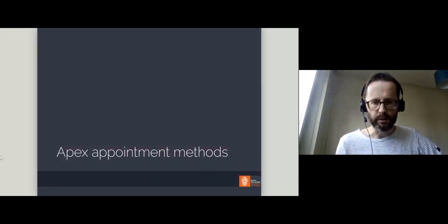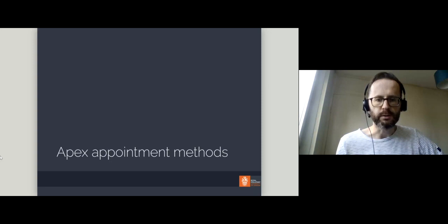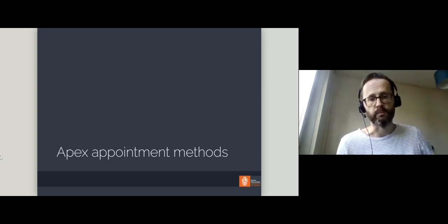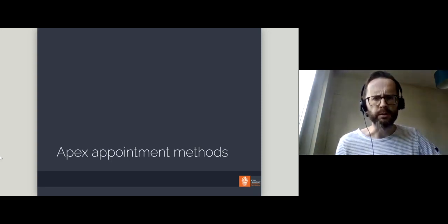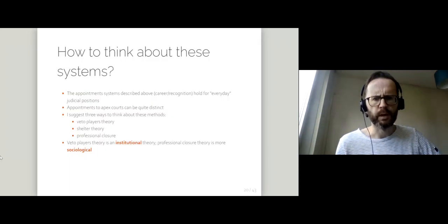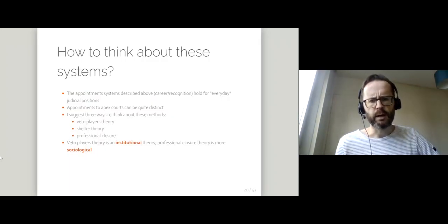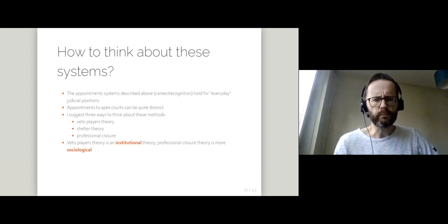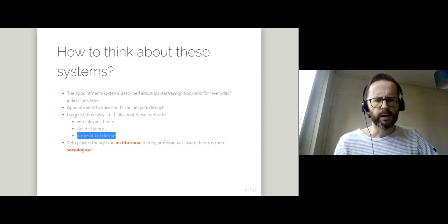In this third video, I'm going to be looking at the methods used to appoint judges to apex courts, or courts at the top of the judicial system. I'm going to be looking at three different approaches: veto players theory, shelter theory, and professional closure.